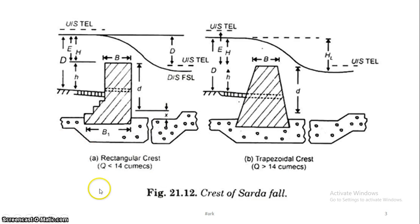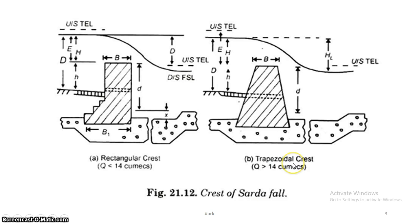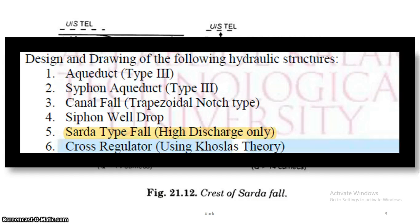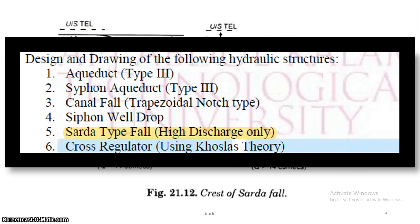We will design for a discharge of 14 cumecs. If the discharge is greater than 14 cumecs, we should adapt the crust shape. We will provide the crust for this high discharge case, denoted as KTS — that is the type of high discharge case.